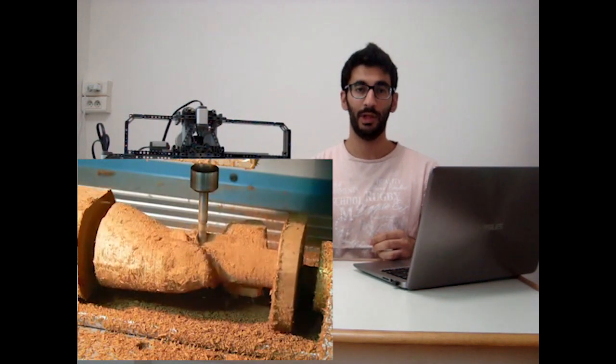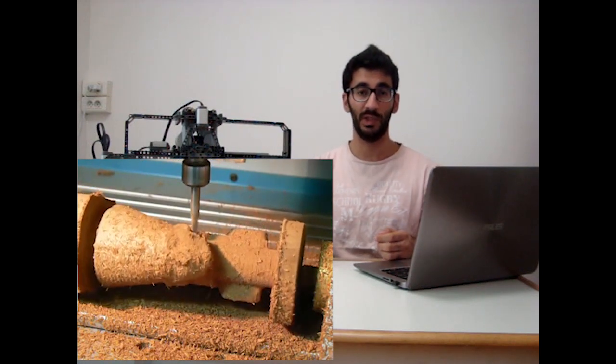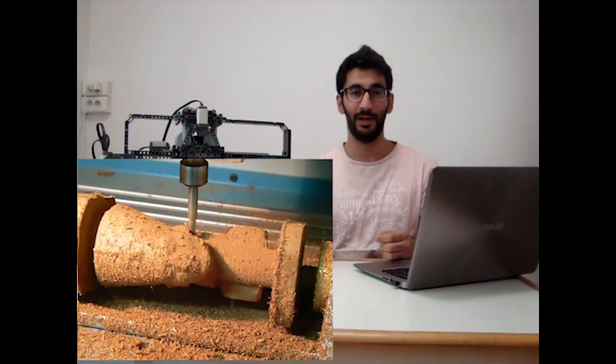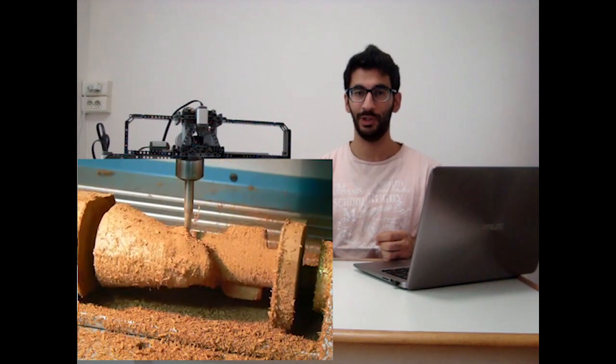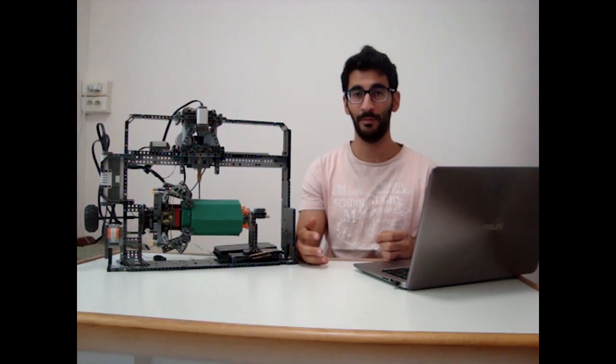This type of milling machine, the rotational milling machine, is very famous and usually used in museums to fabricate replicas. So they can save the original piece of art in a safe place and show us the replicas in the museum.